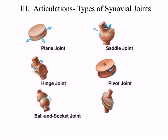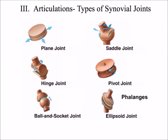The last type of synovial joint is the ellipsoid or condyloid joint, where a concave surface articulates with a convex surface. Examples include the phalanges — the bones of the fingers and toes — articulating with the metacarpals of the palm or metatarsals of the sole of the foot.